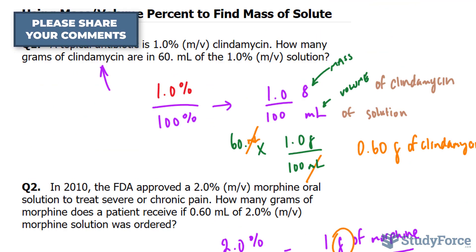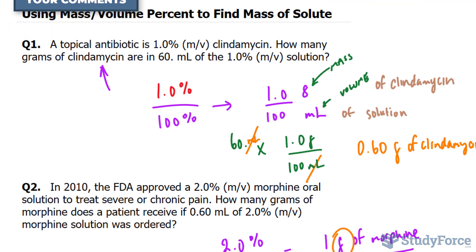And there you have it — two examples on how to use mass per volume percent to find the mass of a solute.